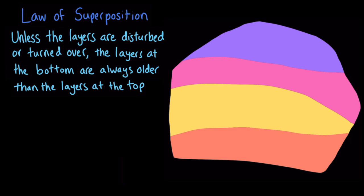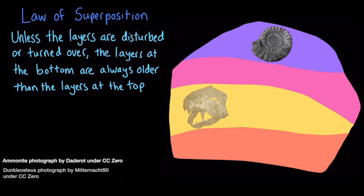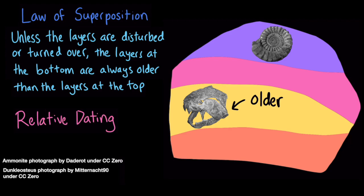So, if a geologist finds a fossil of an ammonite in a layer of rock above a fossil of a dunkleosteus, the scientists would know that the dunkleosteus is older than the ammonite. This process is called relative dating because it helps scientists determine the relative ages of rock layers and fossils.